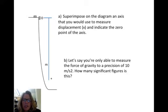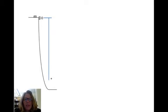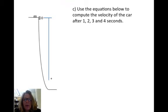The next question is, let's say you're only able to measure the force of gravity to a precision of 10 meters per second squared. How many significant figures is this? We talked about this in class also, but because the one is by itself and the zero doesn't have a decimal point after it, it is just one significant digit.